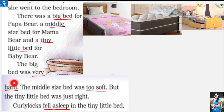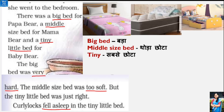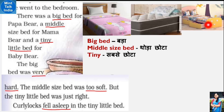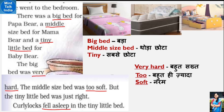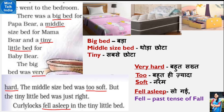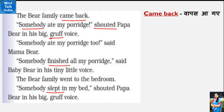The big bed was very hard - Curly Locks ne pehle bade bed pe sokar dekha lekin woh bahut sakht tha. The middle sized bed was too soft - mummy bear ka thoda chhota bed bahut zyada naram tha, Curly Locks to poori andar ghus gayi thi, usme sone mein mazaa nahi aa raha tha. But the tiny little bed was just right - baby bear ka tiny little bed ekdam theek tha, na zyada sakht na zyada naram. Curly Locks fell asleep in the tiny little bed - 'fell asleep' matlab so gayi, 'fell' past tense of 'fall'. Khane peene ke baad use nind aa gayi.